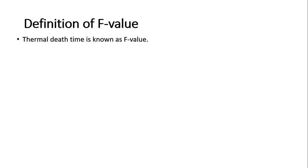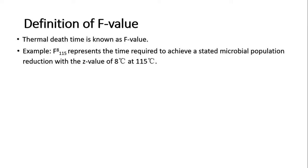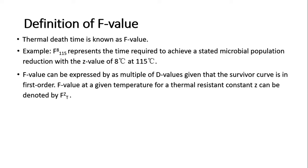Thermal death time is known as F value. For example, F with a subscript of 115°C and superscript of 8°C represents the time required to achieve a stated microbial population reduction with a Z value of 8°C at 115°C. F value can also be expressed as multiples of D values, given that the survivor curve follows a first-order model.